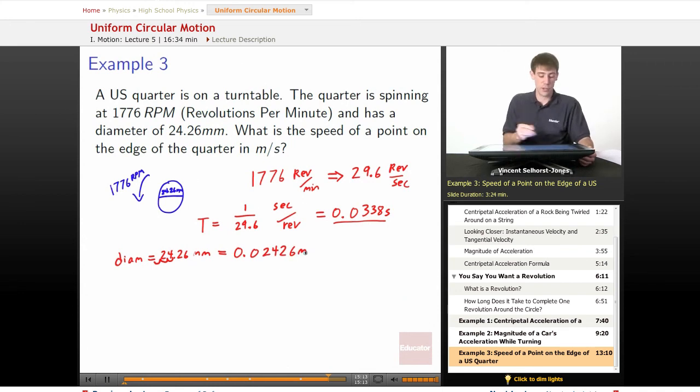Now we've got the information we need to solve. T equals your circumference, which is D times pi (or diameter times pi), divided by the speed. We don't know the speed, but we do know T, and we do know our diameter, and pi is just a constant, so we can solve this now.